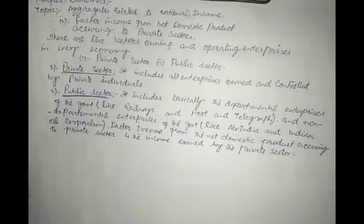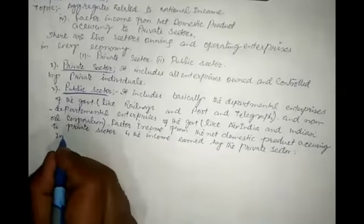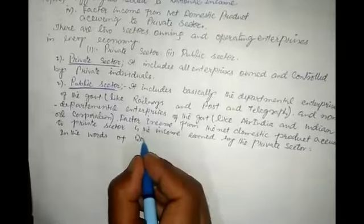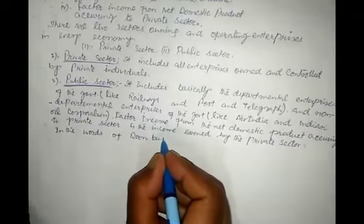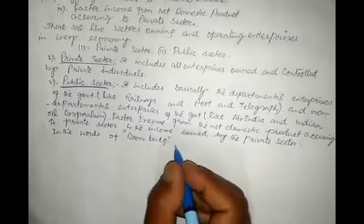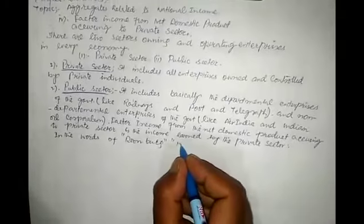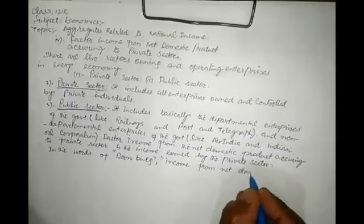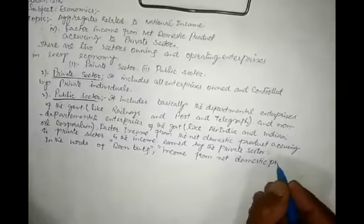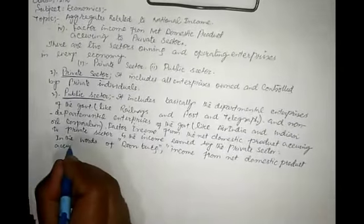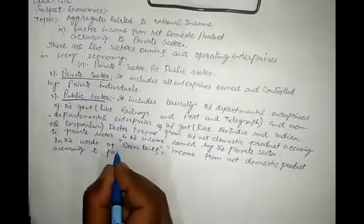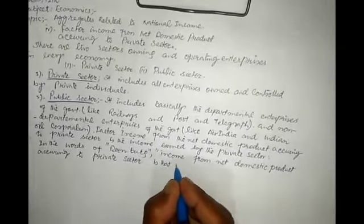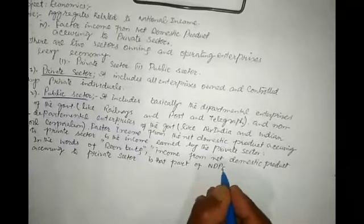In the words of Durban, the factor income from net domestic product according to the private sector is that part of NDP at factor cost which accrues to the private sector.